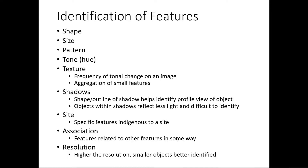So based on all these parameters — shape, size, pattern, tone, texture, shadows, site, association, and resolution — these are more than enough to identify each and every different feature in an aerial photograph. In 99% of cases, these parameters will be sufficient to identify a feature on an aerial photograph or a satellite image.